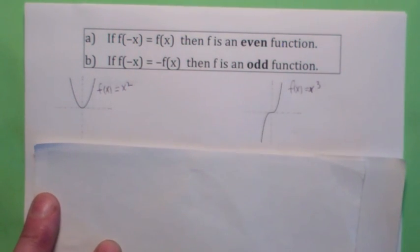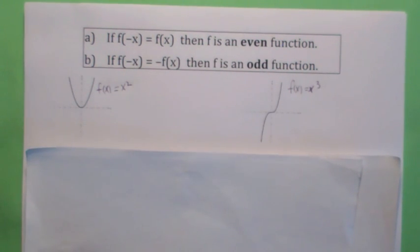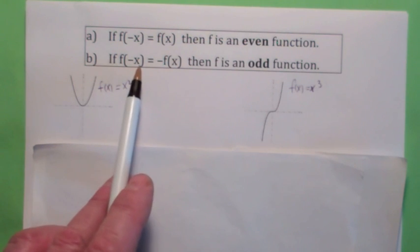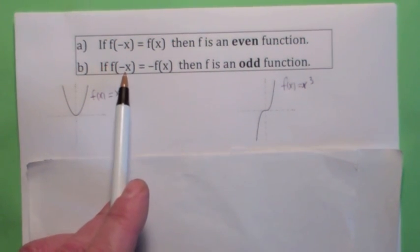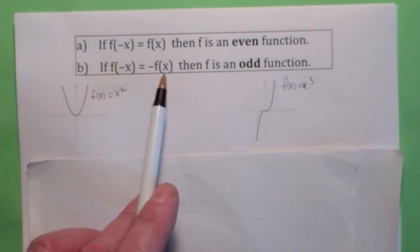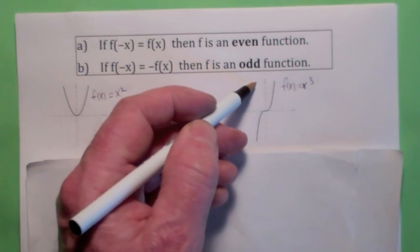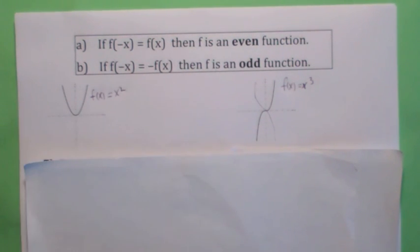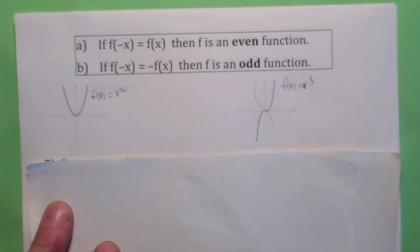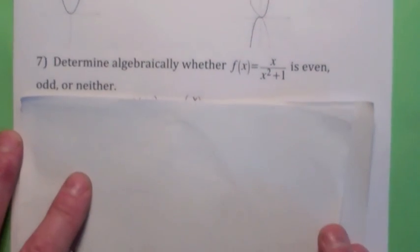Another interesting function is called an odd function. An odd function is one that's symmetric with respect to the origin. If it's symmetric with respect to the origin, if you reflect it across the y-axis, you get exactly the same graph as if you reflect it across the x-axis. So if you reflect across the y-axis, you get a graph kind of like that. If you reflect across the x-axis, you get the same graph.